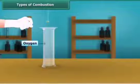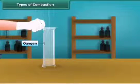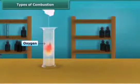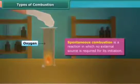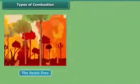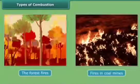When white phosphorus is left in the open for some time, it catches fire. This type of combustion is called spontaneous combustion. Other examples of spontaneous combustion are forest fires and fires in coal mines.